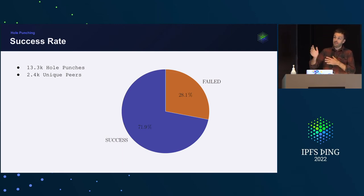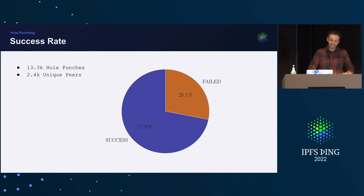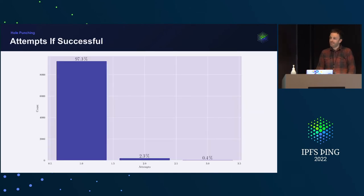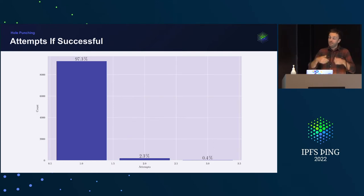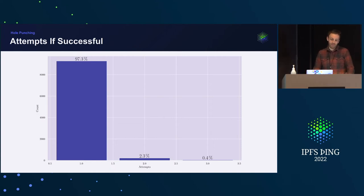Taking that into account, 72% is already a pretty good success rate. Another interesting result: we try hole punching up to three times before stopping. This graph shows we could actually stop after the first attempt — in 97% of cases where the hole punch succeeded, it succeeded on the first attempt. Only 2.3% succeeded on the second try and 0.4% on the third. So if it doesn't work the first time, it likely won't work the second or third time either.